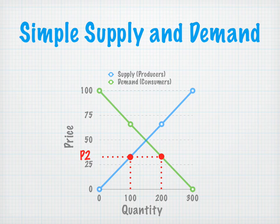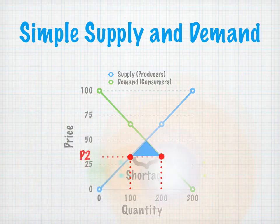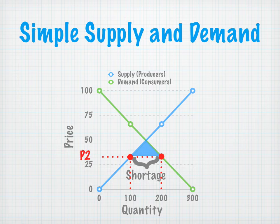200 units. Here we have a problem. Consumers are willing to buy 200 and producers are only willing to produce 100. That leaves us what we call a shortage — again, the distance between the two lines, 100 units.